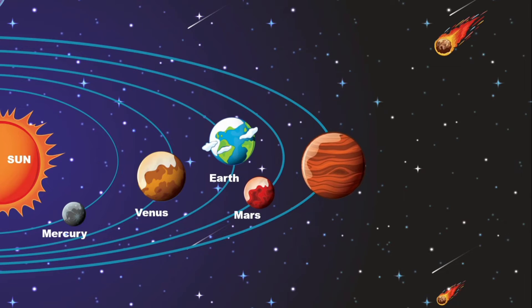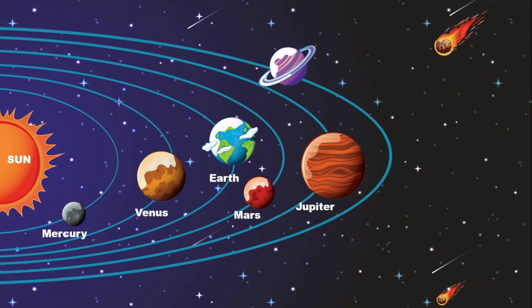Jupiter, the largest planet, consists of gas. Saturn, second largest planet and has a ring made of ice particles.